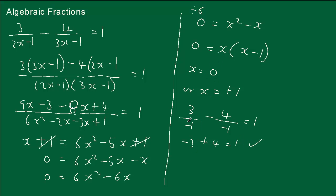We'll just do the other one quickly. We put x equals 1 in. So that's 3 over (2 times 1 minus 1) which is 3 over 1, minus 4 over (3 times 1 minus 1) which is 4 over 2. Well 3 over 1 is 3, and 4 over 2 simplifies to 2. So 3 minus 2 is 1. That works. And that's algebraic fractions — I'll do another one.